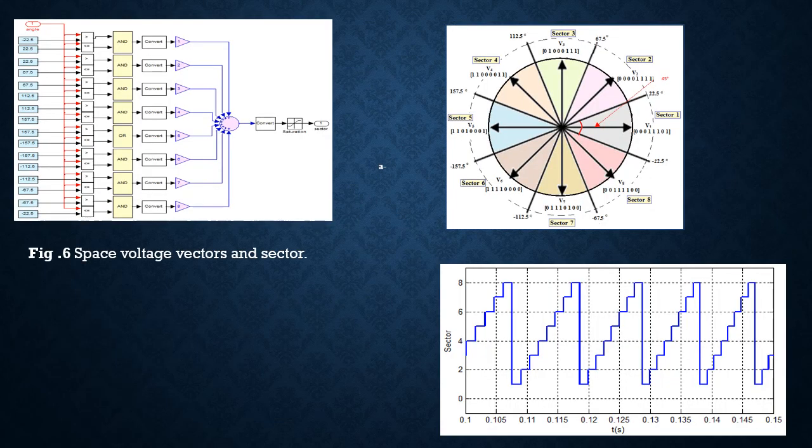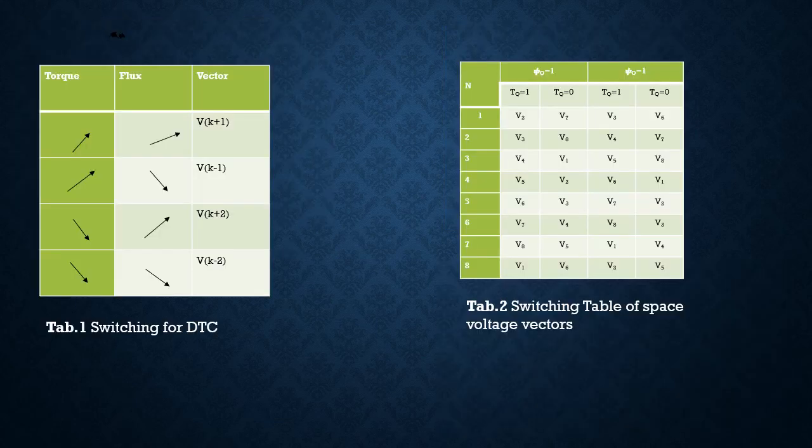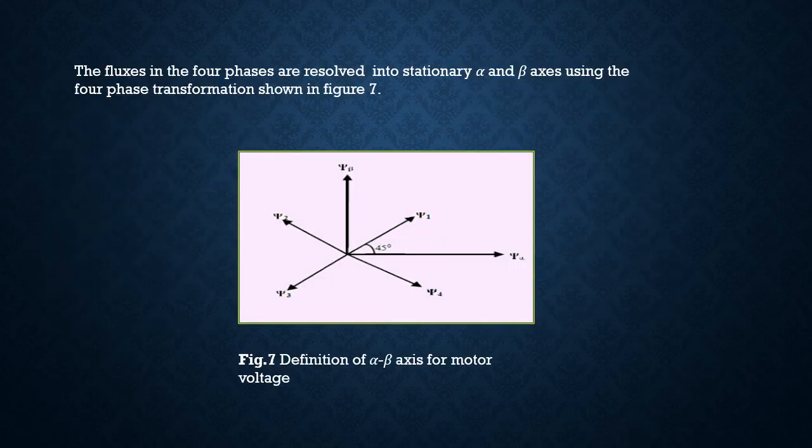Space voltage vectors and sectors are defined. The fluxes in the four-phase system are resolved into stationary two-axes using the four-phase transformation shown in Figure 7.